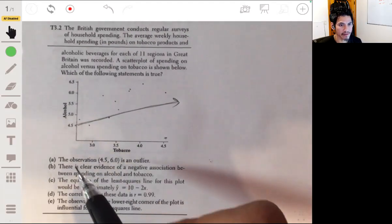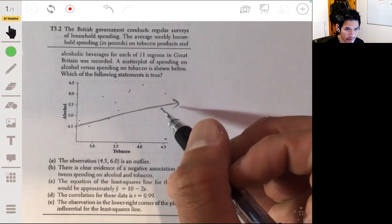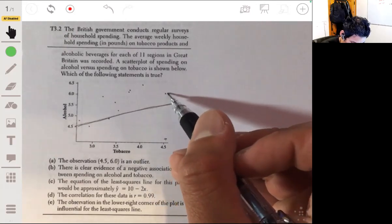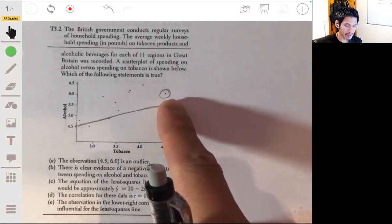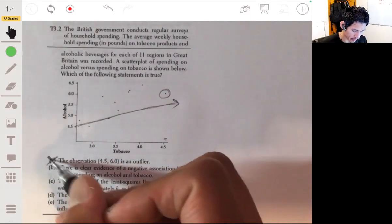Now let's see. The observation (4.5, 6.0) is an outlier. So it looks like we're talking about this. This would not be an outlier because it basically follows the general trend. An outlier can't follow the pattern.